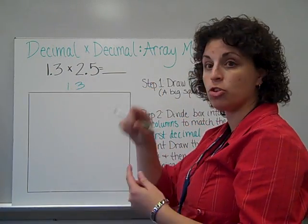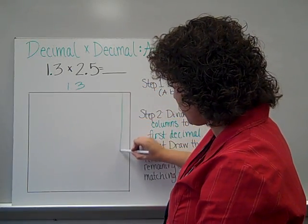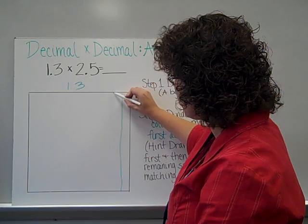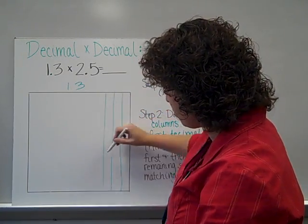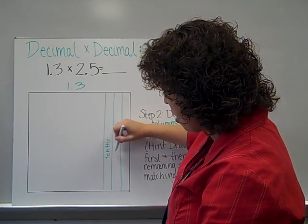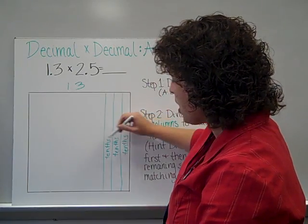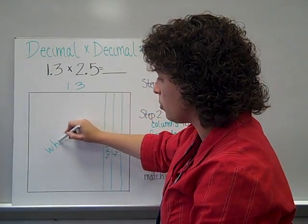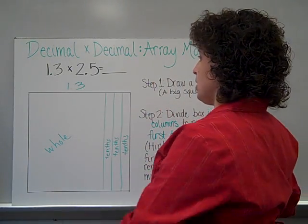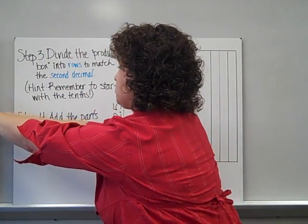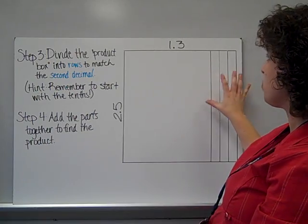So I need 3 tenths. Well, if you think about tenths on our hundredths grid, those were tall and skinny. So that's what my tenths should look like here. There's 1, there's 2, and 3. So these tall, skinny columns are representing my tenths. I had 3 of them. And then this would represent the one whole that I have here.